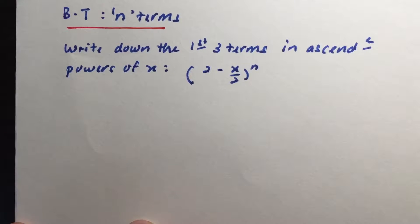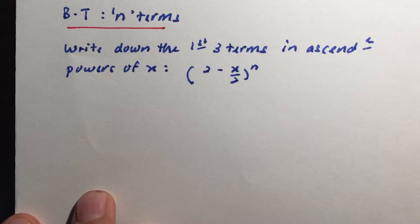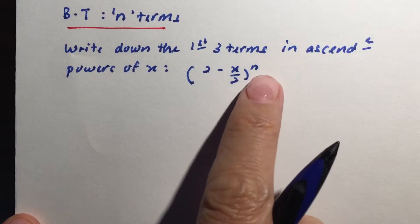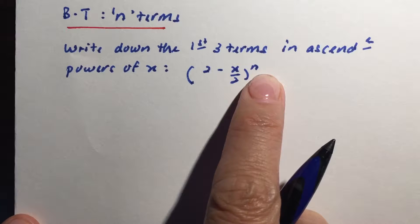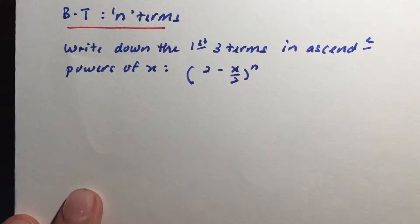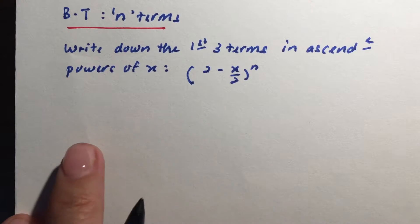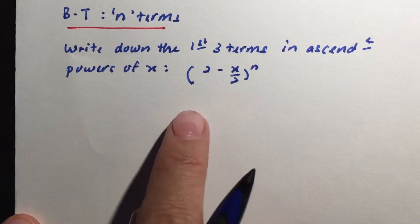We're going to deal with binomial terms where they ask you to expand, but the power given is in terms of n — no specific number, just n. They ask you to write down the first three terms in ascending powers of x.